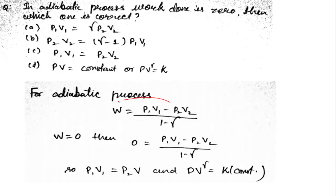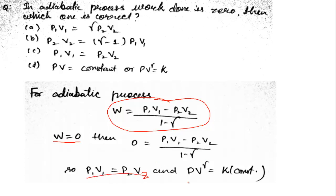W = (P₁V₁ - P₂V₂) / (1 - γ), where P₁ and P₂ are the pressures and V₁, V₂ are the volumes. Since work done W is zero, we get zero equals that expression, which means P₁V₁ = P₂V₂. This implies PVᵞ = constant or PV = constant.